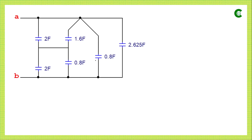This is the modified circuit where 0.8F, 0.8F and 1.6F have just been calculated from the star-to-delta conversion. In this modified circuit, 2 farad and 1.6 farad are connected in parallel — these two points are the same with no component in between. Similarly, the 2 farad and 0.8 farad are connected in parallel, and the 0.8 farad and 2.625 farad are also connected in parallel.